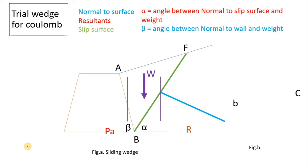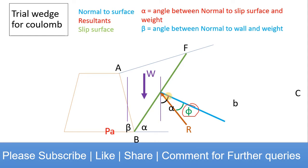Draw normal to the failure plane. Assume reaction R on the failure plane acting at phi angle from the normal. Similarly for PA, it is assumed to act at delta from the normal.